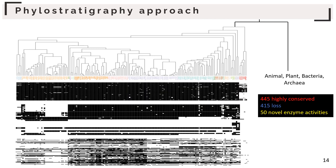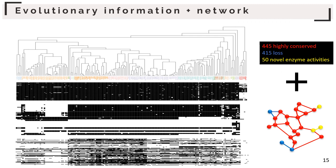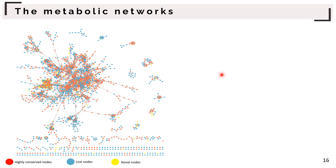With this approach, we identified that around 870 enzyme activities were ancestral, where half of them have been lost by some species during evolution, and we only identified 50 novel enzyme activities. At this stage, we linked this evolutionary information with the metabolic network by investigating the conservation level of enzyme activities relative to their localization in the metabolic network.